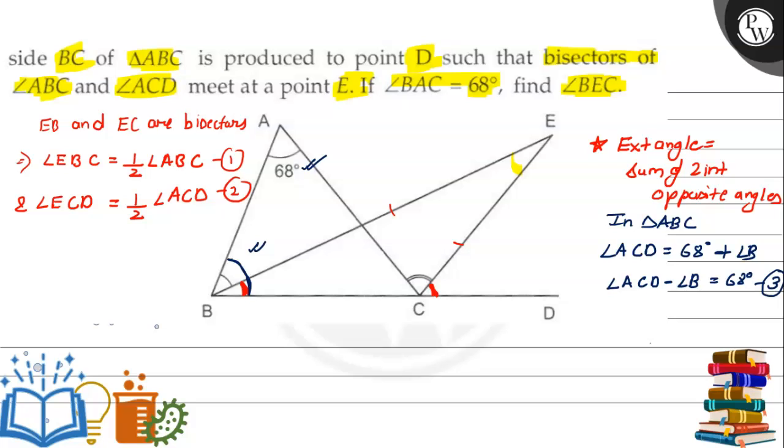Now if we apply this same concept in triangle ECB, in triangle ECB if we apply the same concept, we can see this angle here is our exterior angle. This is angle ECD. Angle BEC plus angle EBC, these two are the interior opposite angles, equal to the exterior angle.